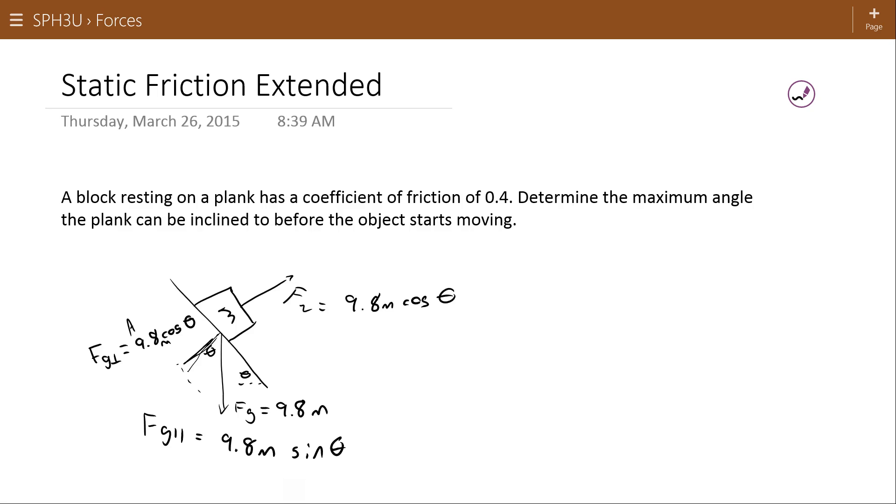So if this part of gravity is trying to pull the object down the plane, the force that's resisting that is the force of friction. Just before this object starts to move down the plane, they're canceling each other out, so the value of this force of friction must also be 9.8m sin theta. These can be viewed as pairs that are canceling each other out.